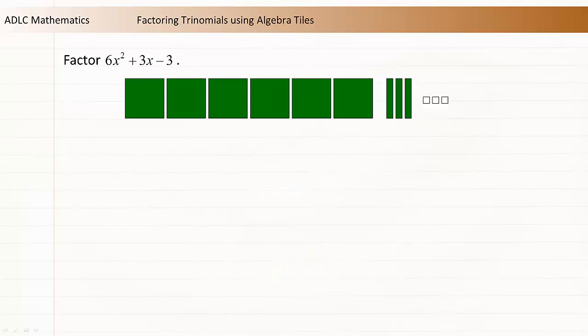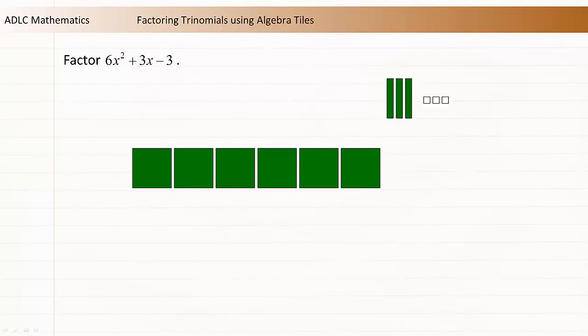Right now, the x² tiles are in a 1 by 6 rectangle. Let's try moving the negative 1 tiles to the bottom right corner. Now try moving the x tiles to make a rectangle. This isn't looking good. Even if we introduce zero pairs of x tiles, we can't fill the bottom left rectangle with identical tiles and still have the entire rectangle represent the original trinomial.